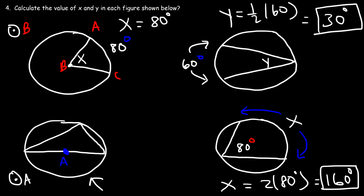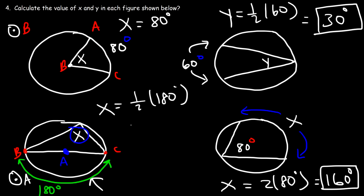For the bottom-left figure, x represents the inscribed angle. The angle intercepts points B and C, and A is the center of the circle. So chord BC is the diameter, bisecting the circle into two equal parts. Half of 360 is 180, so the intercepted arc is 180 degrees. The inscribed angle is half the intercepted arc, so x equals half of 180, which is 90 degrees — making this a right triangle.